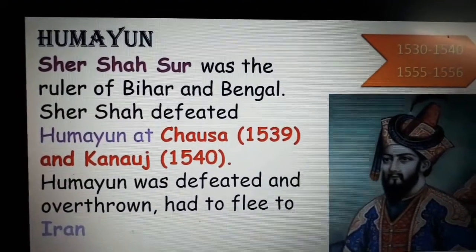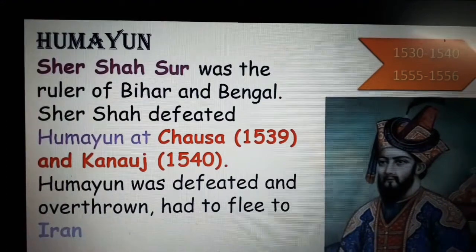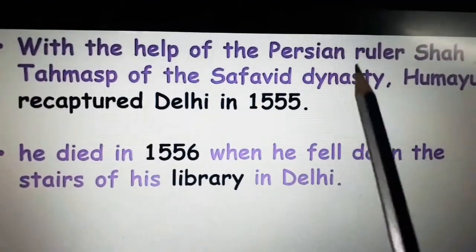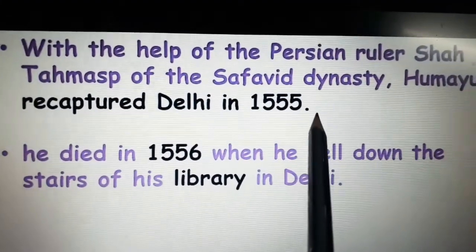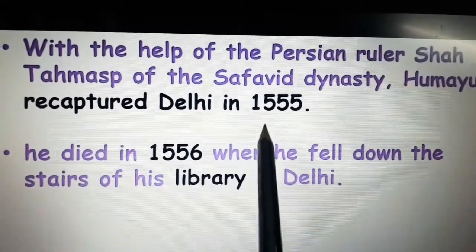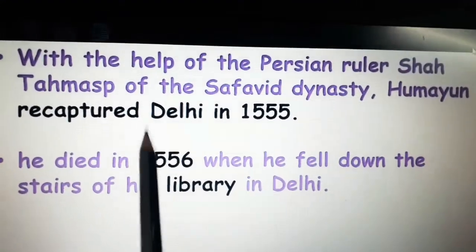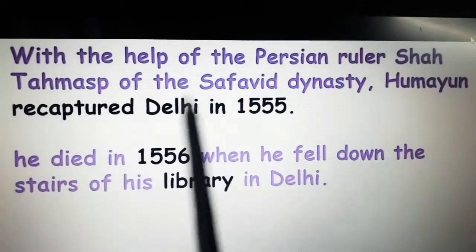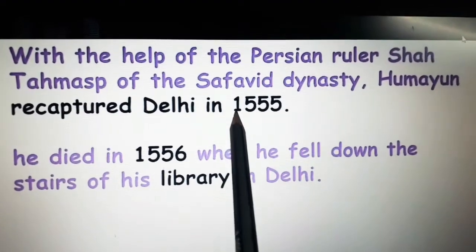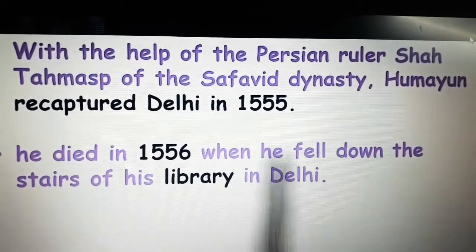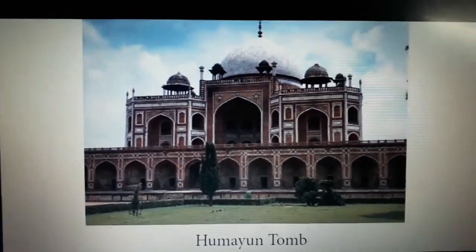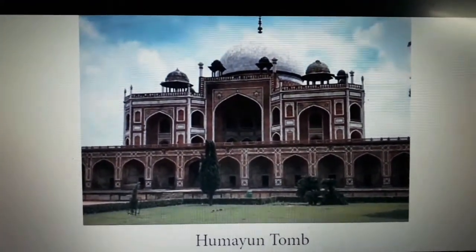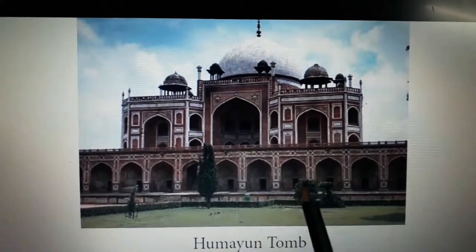Flee means he was overthrown to another country. With the help of Persian ruler Shah Tahmasp of the Safavid dynasty, Humayun again recaptured Delhi in 1555. Within one year he died when he fell down the stairs of his library in Delhi. This is the Humayun tomb — the monument built in his memory.